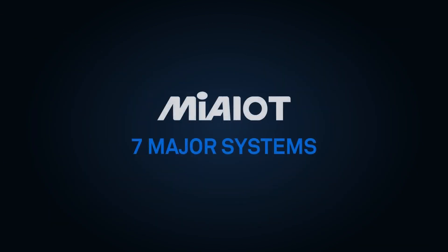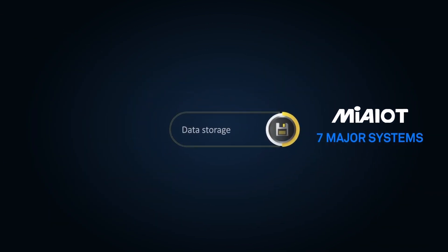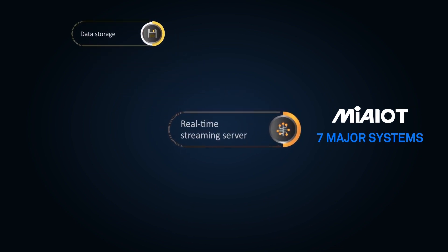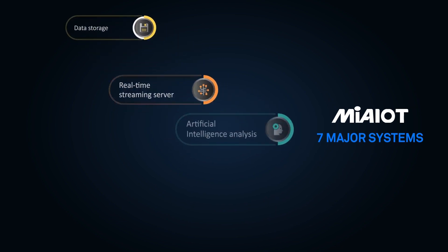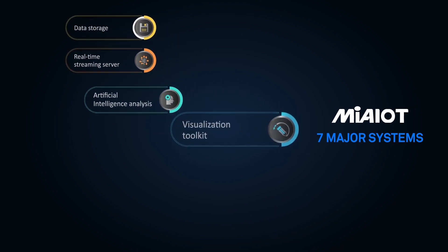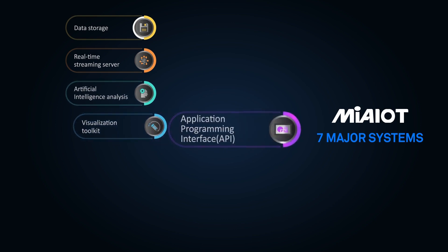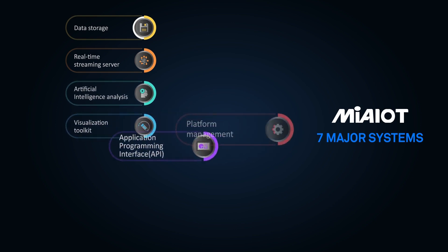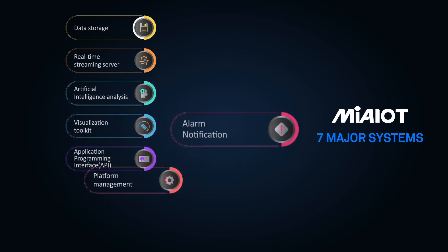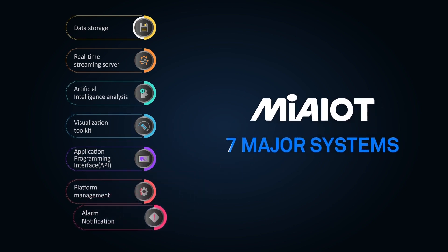This platform has seven main systems: data storage, real-time streaming, AI analysis, visualization toolkit, API, platform management, and alarm notification.